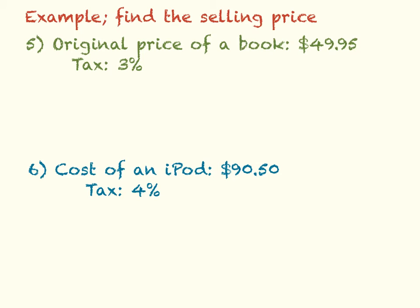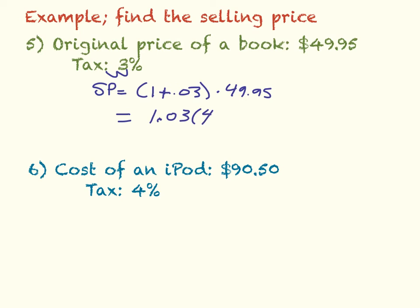Example 5: the original price of a book is $49.95 and the store is going to charge a tax of 3%. My selling price is going to be equal to 1 plus 0.03 times $49.95. So 1.03 times $49.95 — when I type that into the calculator, I get an actual price of $51.45. That is your final answer.